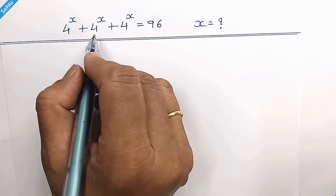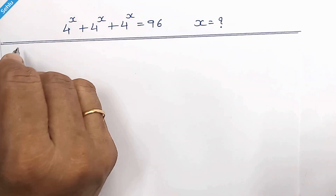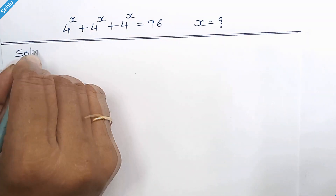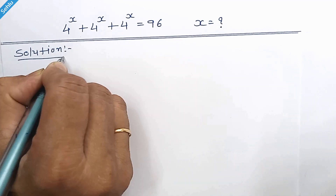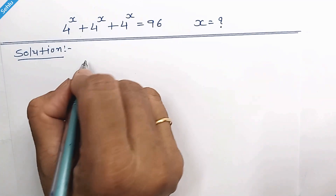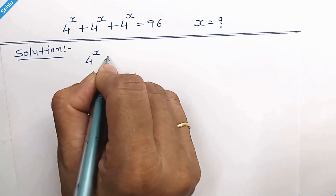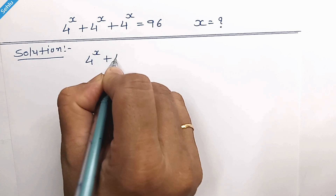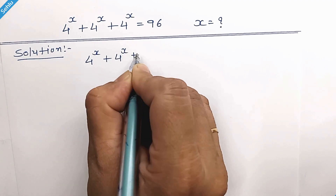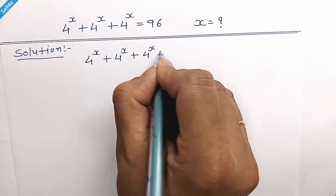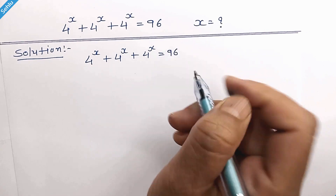Hello everyone, let's solve for x. Let me put the question first. 4 to the power x plus 4 to the power x plus 4 to the power x is equal to 96.